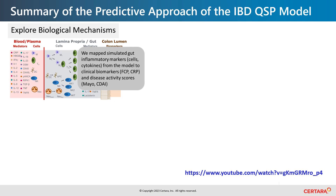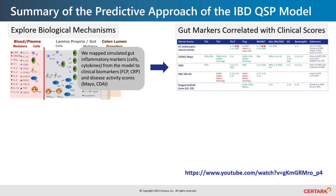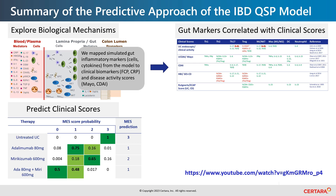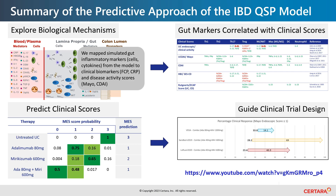We developed a mechanistic QSP model of IBD based on a detailed biological map of key cell types, disease mediators, and biomarkers in blood and gut. The output of the QSP model was subsequently linked to clinical endpoints such as the Mayo score using machine learning. The integrated platform was calibrated with clinical data from known therapies such as adalimumab and mirikizumab, as shown here for the Mayo Endoscopic Score (MES). The calibrated model was then used to simulate virtual trials, showing how results from published trials could be improved by increasing dose and/or adding a second therapy.